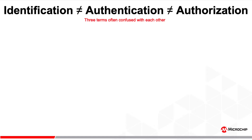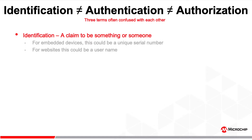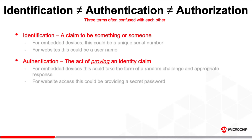Devices need to identify themselves, but that's not enough. I can tell you my name is Dan, but how do you know for sure? Devices need to authenticate, meaning they need to prove their identities. If I had to authenticate myself, I could show you my driver's license. My driver's license is issued to me by a mutually trusted authority, the Department of Motor Vehicles. You could examine my license, see it as a genuine product of the DMV, and be assured my name is really Dan.